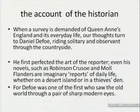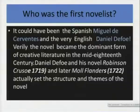Who was the first novelist therefore? If you can say, it was the Spanish Cervantes and the very English Daniel Defoe — both of them can occupy the same position. Verily the novel became the dominant form of creative literature. In the mid 18th century, Daniel Defoe and his novel Robinson Crusoe in 1719, and later Moll Flanders in 1722, saw the reading public increase, and he had a great following.